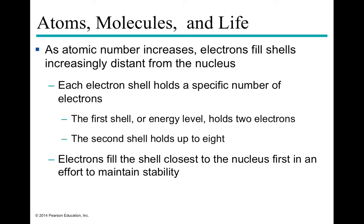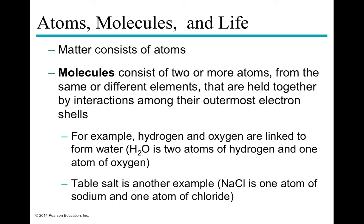Every electron shell holds a specific number: the first holds two, the second holds eight. If an atom has one, two, or three electrons in its outer shell, it wants to release them; if it has seven, it wants to gain one to reach eight; if it already has eight, it's neutral. The inner shell always fills first, so subtract two from the atomic number to get the number of valence electrons you're working with when thinking about how atoms interact to make molecules.